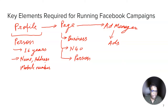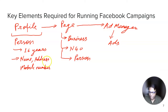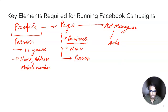So when we run a brand new campaign for a small brand which does not have a profile, we ask them to create a profile in the name of somebody in the company who is stable and whose mobile phone can be reached. And then with that profile, we create a page. This page can be of any type — it can be a business page. For instance, if you want to make a page for a D2C brand.